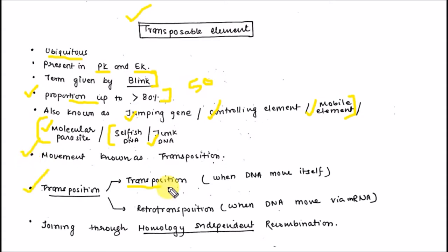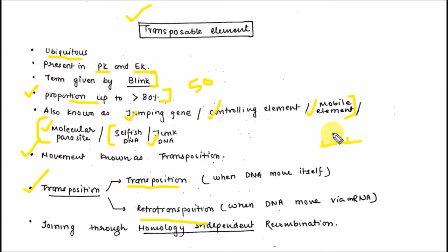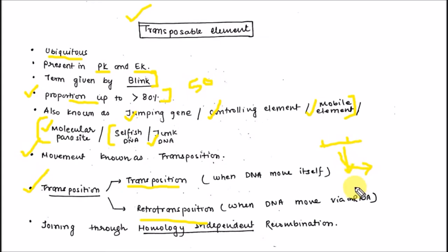Transposition can be divided into two parts: transposition and retrotransposition. Transposition occurs when a transposable element moves itself by a cut-and-paste mechanism or copy-and-paste mechanism. Retrotransposition is when DNA moves via mRNA — the DNA is transcribed to mRNA, and through that mRNA, the DNA moves from one position to another.